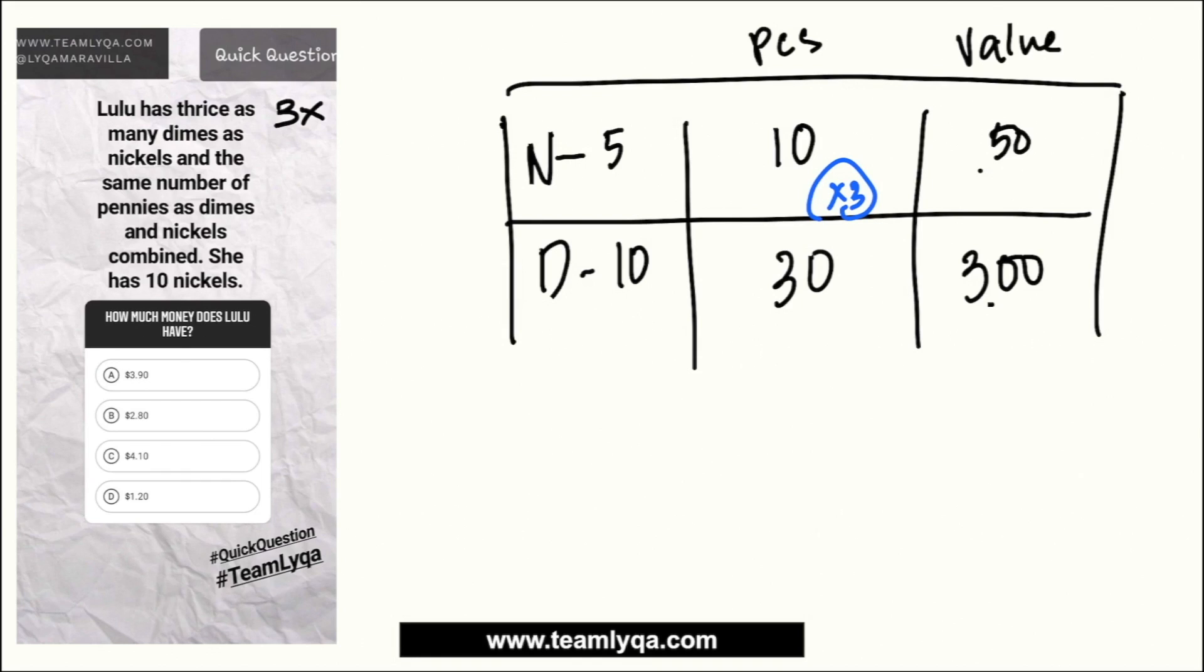And if you're taking a test like this, you can automatically eliminate anything lower than $3.50. Because $2.80 can't work, it's too low. $1.20 also can't work. Only two left. And again, if you're running out of time, if the proctor is pulling your paper already because they're making you submit, at least $50-50 is your chance of getting the right answer.